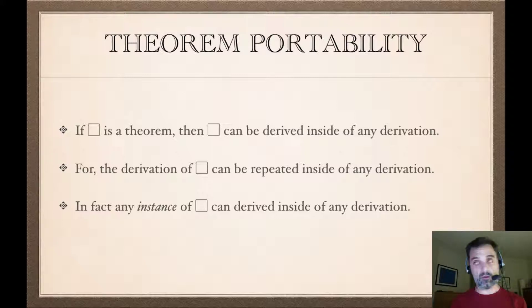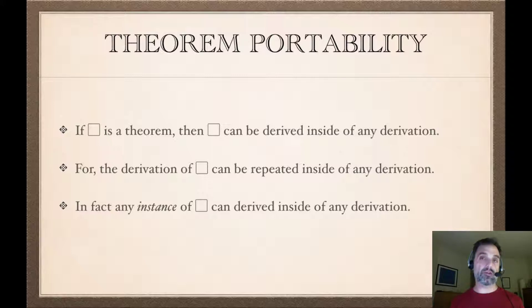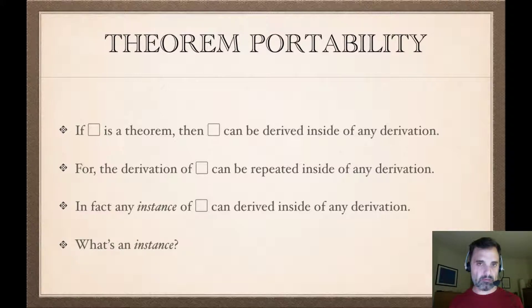It's not just that we know 'if Q then if P then Q' is a theorem and can derive that sentence inside any derivation. In fact, we can derive any instance of that theorem — any instance of 'if Q, then if P then Q' — inside anywhere else. But what does that mean? What's an instance?